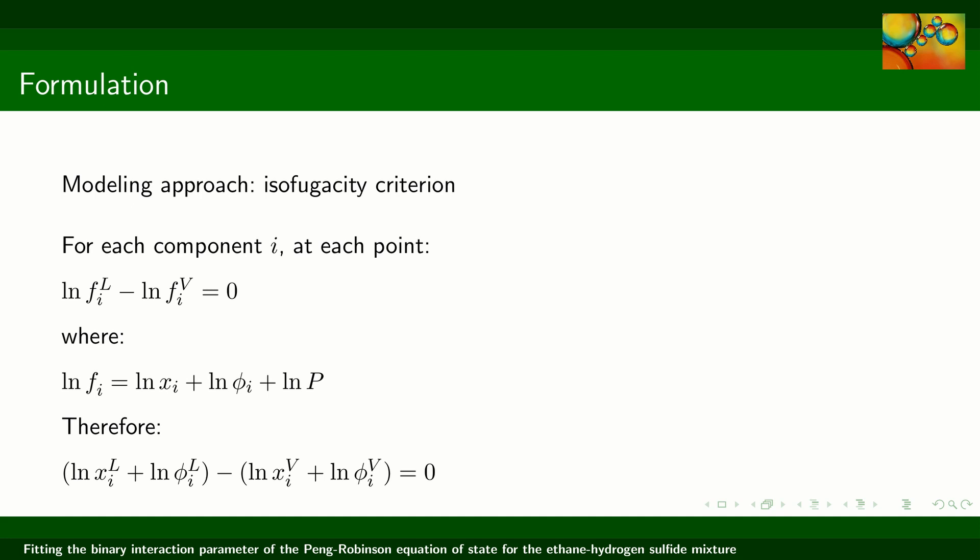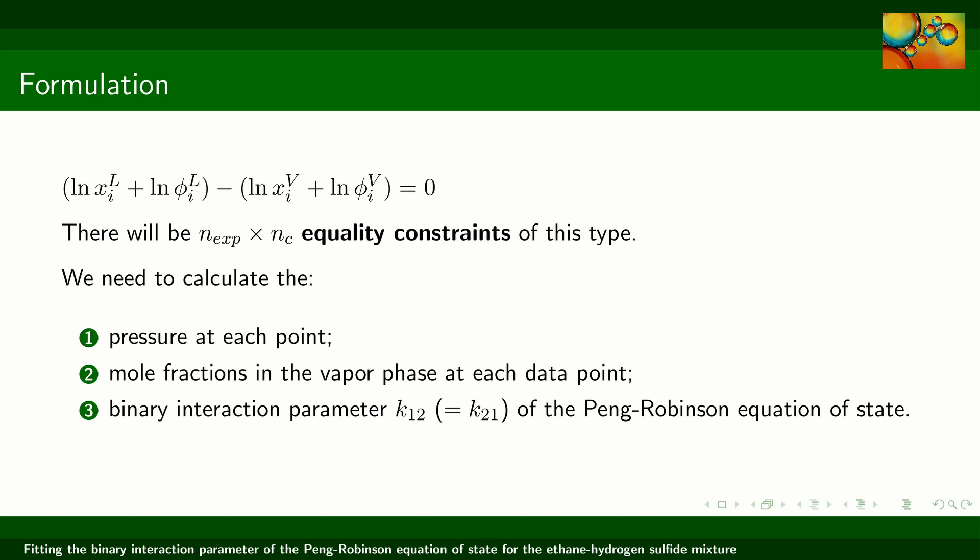In this way, what we have for each of these compounds is that the difference between the logarithm of the fugacity in the vapor and liquid phases should be equal to zero. The logarithm of the fugacity is equal to the summation of the logarithm of the mole fraction plus the logarithm of the fugacity coefficient plus the logarithm of pressure. When we combine these formulas, the logarithm of the pressure cancels out. We have an equation like this for each component at each experimental data point, giving a total of nx times nc equality constraints in our optimization problem.